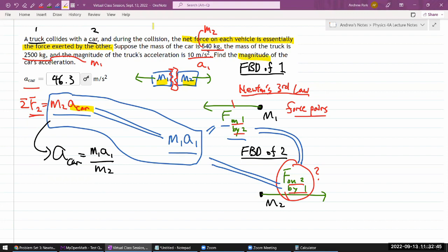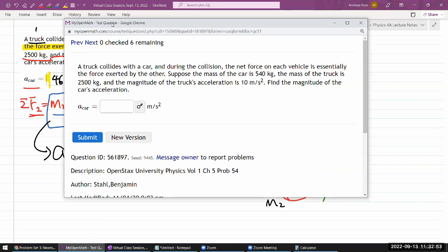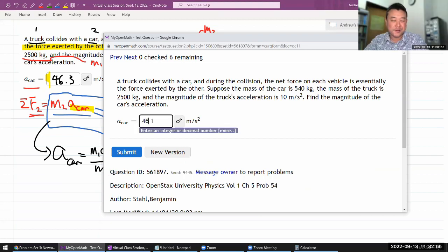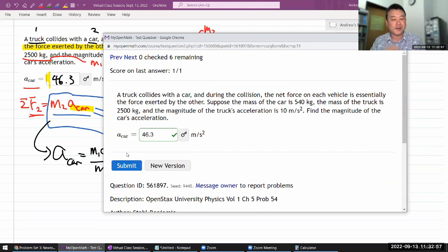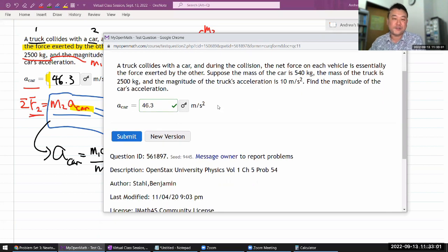So 46.3 meters per second squared. The question says find the magnitude of the car's acceleration, so they do want the positive quantity. The sign here doesn't matter to them. If it wasn't clear, I would just start out with this, and if it says the answer is wrong, I'll try something else. You have a hundred tries, so use them.